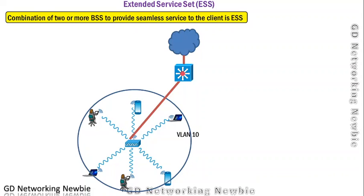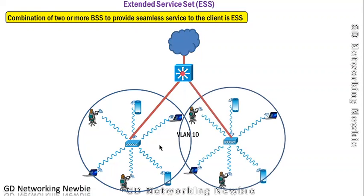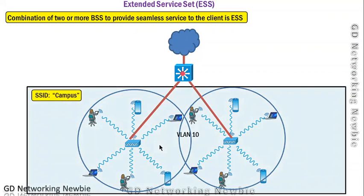The next point is the extended service set. At the moment we have one wireless LAN with one access point. However, one access point may not cover the complete area where we want to offer wireless LAN services — for example, a big shopping mall, a big building, or an organization with different departments. We want to provide Wi-Fi service with the same SSID across ground floor, first floor, and third floor. The option is to combine two or more BSSs to provide seamless service to clients, and that combination is known as the extended service set.